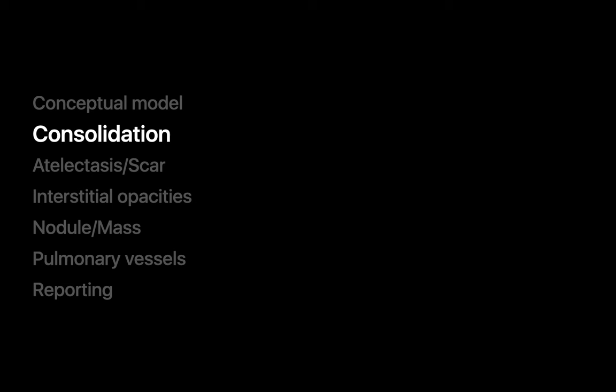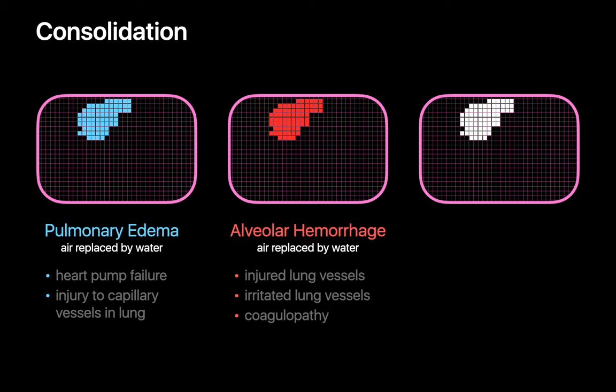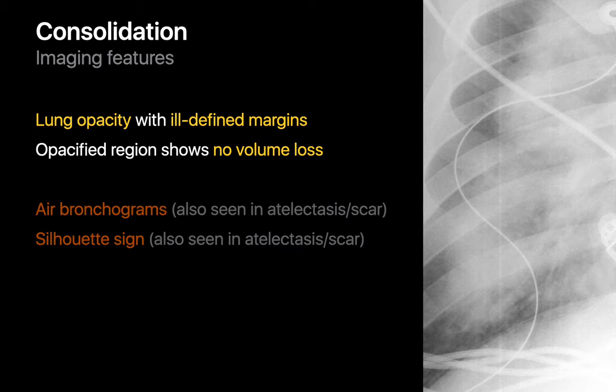When consolidation is present on a chest x-ray, it may represent pulmonary edema from heart failure, or capillary leak edema from injured capillary vessels in the lung. It may represent alveolar hemorrhage from injured or irritated blood vessels, or in the setting of a coagulopathy. The consolidation may also represent pneumonia. The customary appearance is a lung opacity with indistinct margins not associated with local lung shrinkage, though it can be tough to exclude volume loss with smaller opacities.